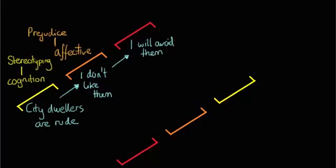And then, moving from the affective component, we start to avoid them. What happens there? When we avoid them, we are actually demonstrating a behavioral component. And when we demonstrate a behavioral component, we're actually moving from prejudice to discrimination.